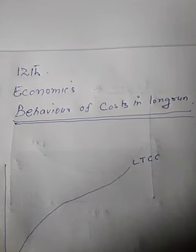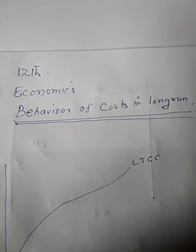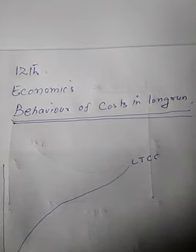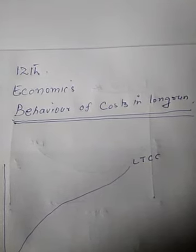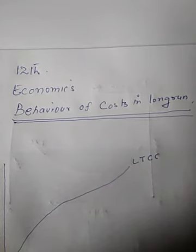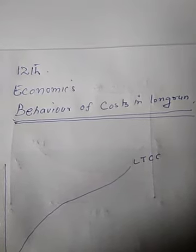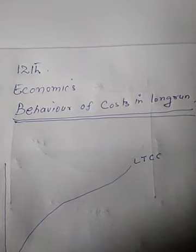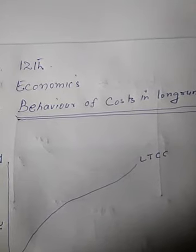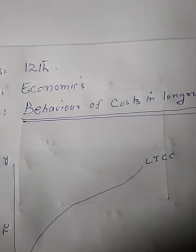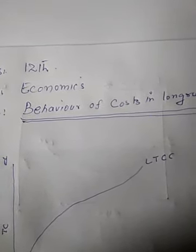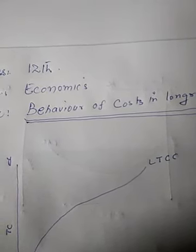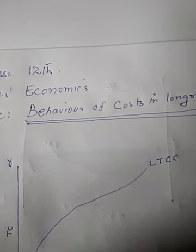Accordingly, all costs are under the control of the producer and therefore must be covered. In short, during the short period, the cost of a fixed factor becomes irrelevant — the producer must cover at least variable costs during the short period, and all costs — fixed as well as variable — during the long period. Now since all factors tend to become variable in the long run, there is no distinction between variable costs and fixed costs; all costs are variable in the long run.